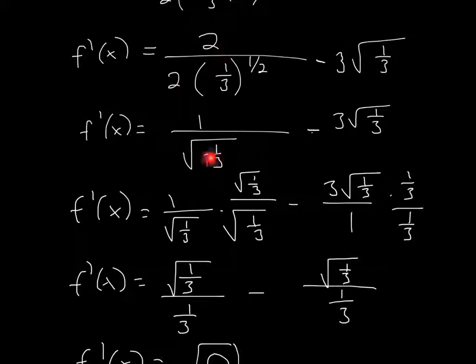And you're left with 1 over square root of 1 over 3, because 1 third raised to the 1 half is the same as square root of 1 over 3. And you're left with this over here.